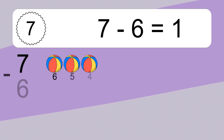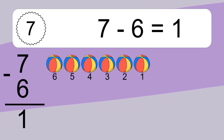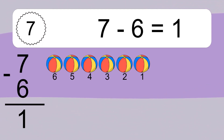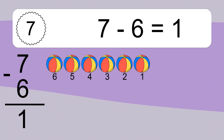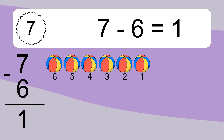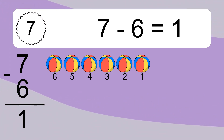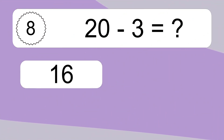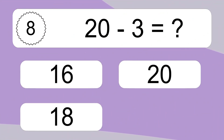7 minus 6 equals what? 7 minus 6 equals 1. Let's count it: 6, 5, 4, 3, 2, 1.